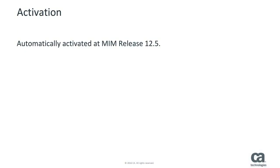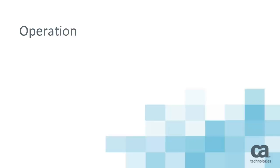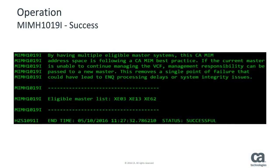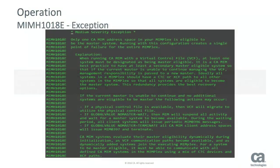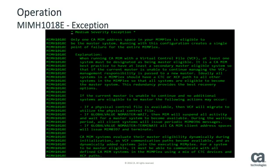This health check is automatically activated at startup at MIM release 12.5. When the CA MIM address space is running with a virtual control file and has multiple eligible masters, this is the message that you will see in the health check service. When the CA MIM address space is running with a virtual control file that has only one eligible master, this exception message is issued to your system log.